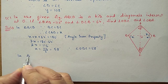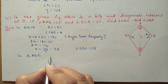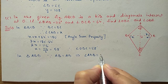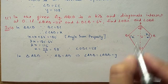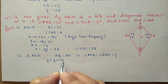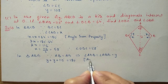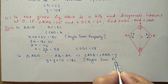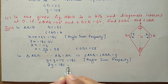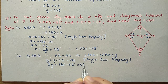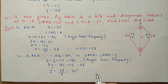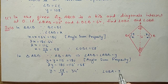Now in triangle ABD, because AB is equal to AD, angle ADB is equal to angle ABD, both equal to Y. Using the angle sum property: Y plus Y plus 112 is equal to 180 degrees. So 2Y is equal to 180 minus 112, equal to 68 degrees. Y value will be 68 divided by 2, equal to 34 degrees. Therefore angle OBA is equal to 34 degrees.